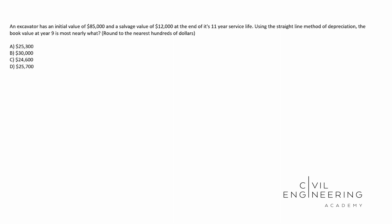So we're going to start this problem by finding the formula we need. If you're a formula type of person, you can find that in the PE manual on page 38, and in the FE manual on page 231. When you look on those pages, you're going to find that D sub J is equal to C minus S sub N, all over N.